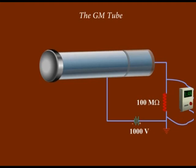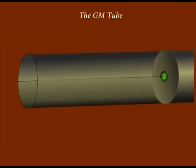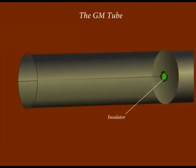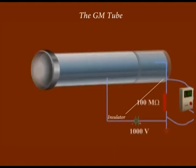Next is the Geiger-Müller tube. The Geiger-Müller or GM counters are gas-filled radiation detectors that operate by using the ionizing nature of alpha, beta, and gamma radiations. The GM tube is a sealed metal cylinder containing a low-pressure inert gas such as argon or neon. A thin metal wire runs down the center of the tube, which is electrically insulated from the outer cylinder at the rear end. The front of the tube is sealed with a radiation window that is specific to the type of radiation to be detected.